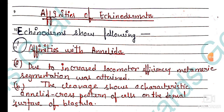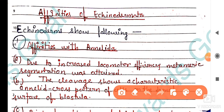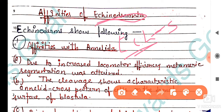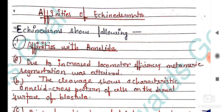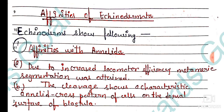Echinodermata is made by two words: 'Echino' means spiny, and 'dermata' means dermal or exoskeleton. So basically this refers to a spiny exoskeleton, and that is why the phylum is called Echinodermata.